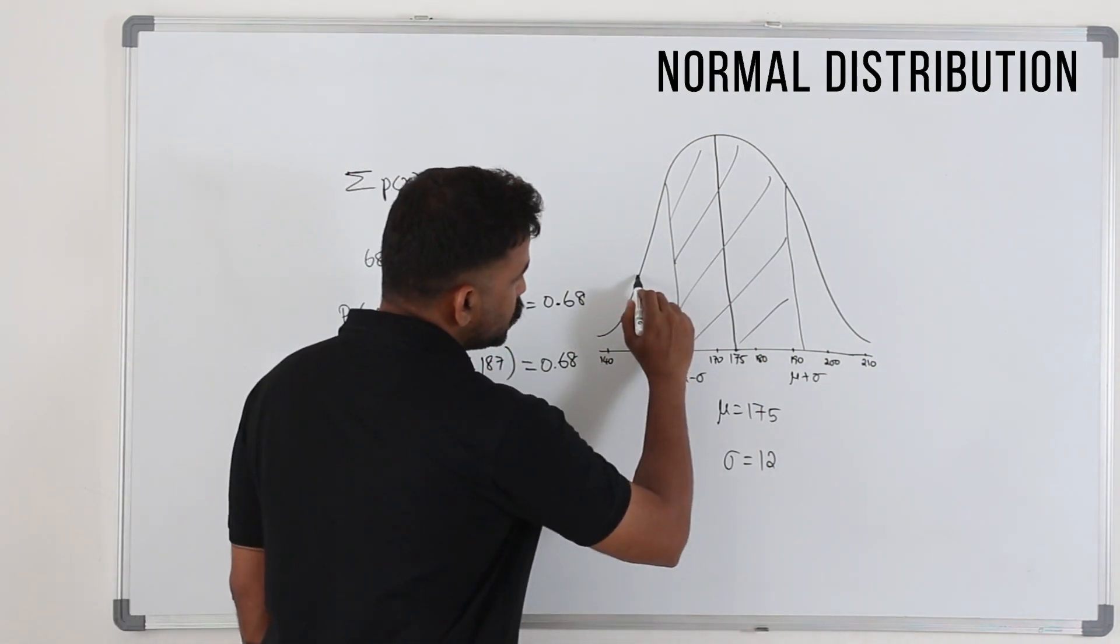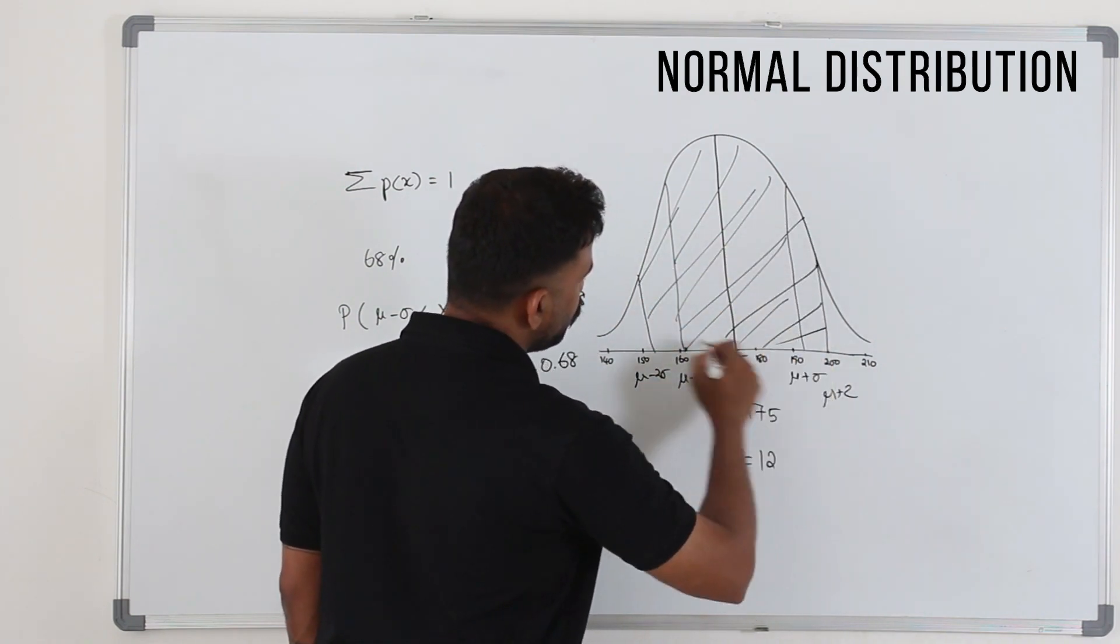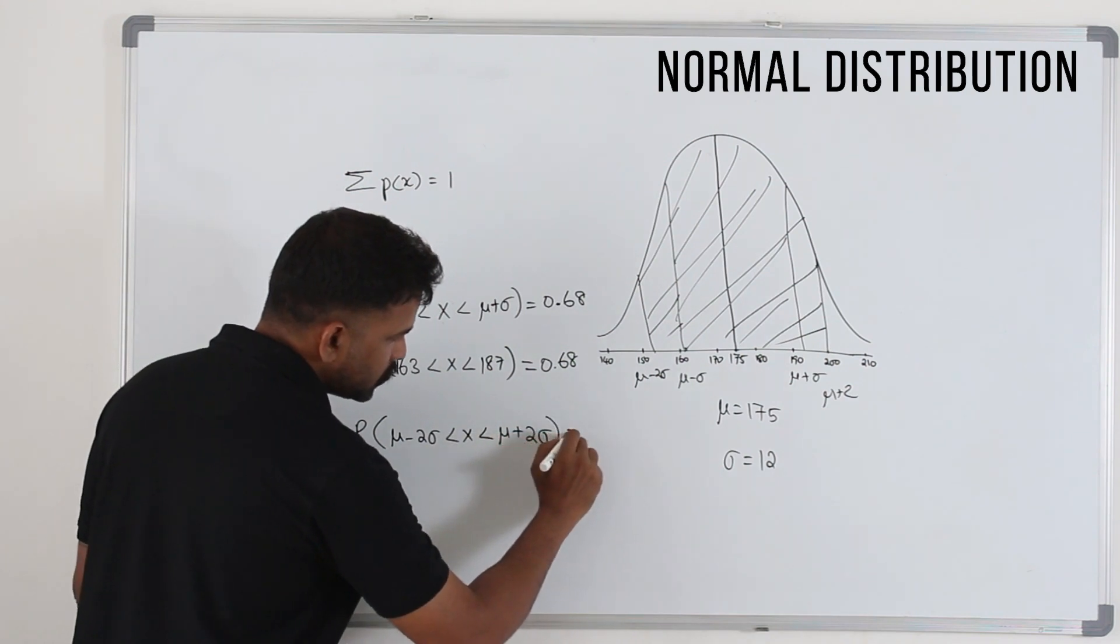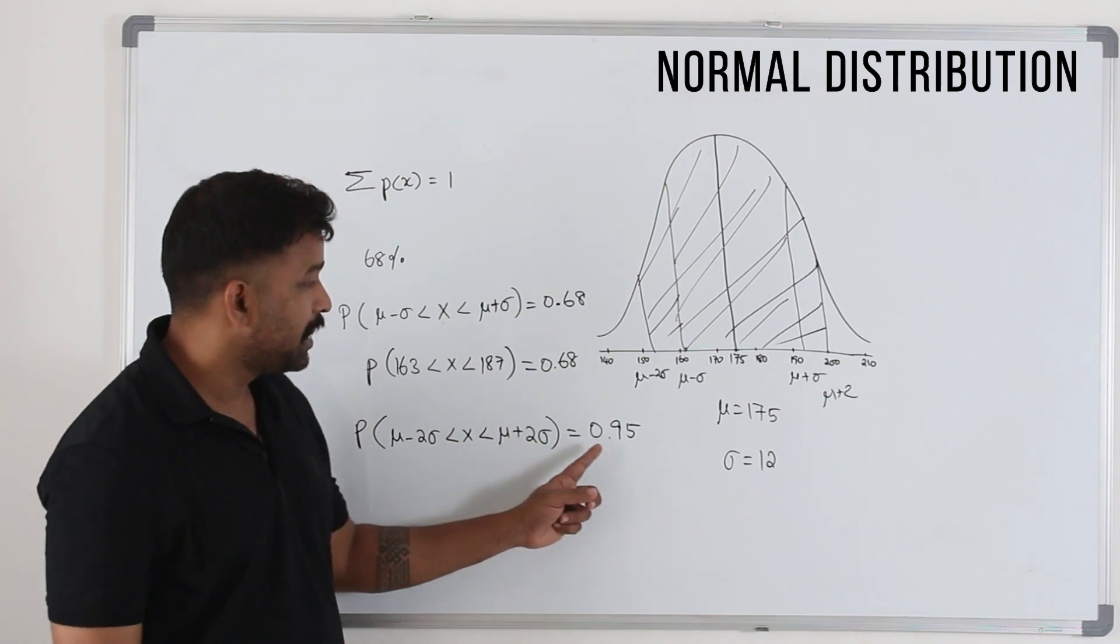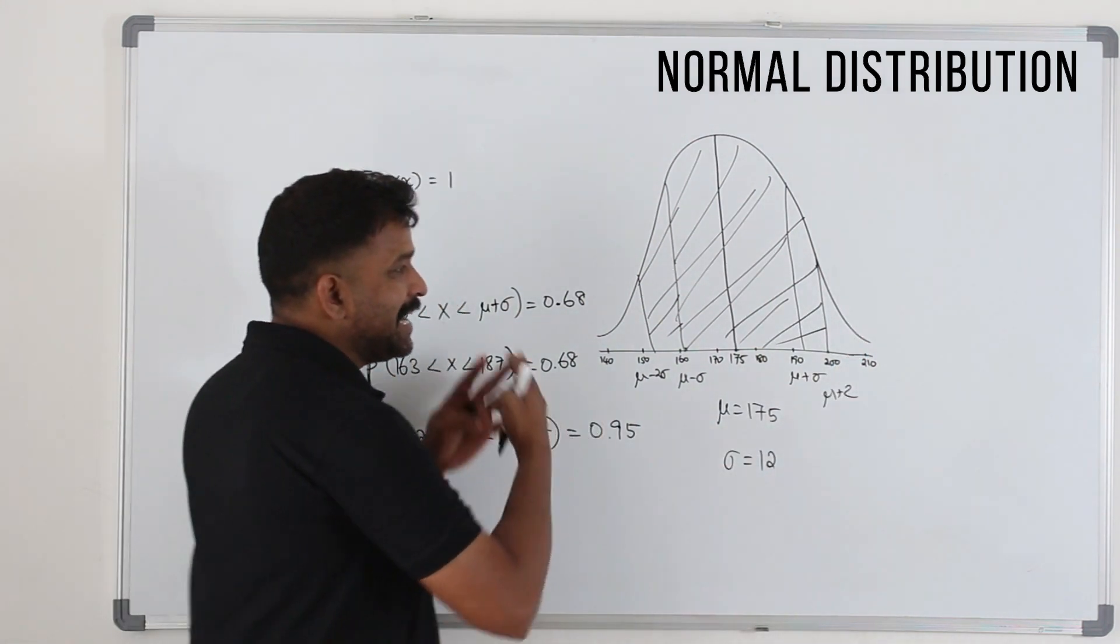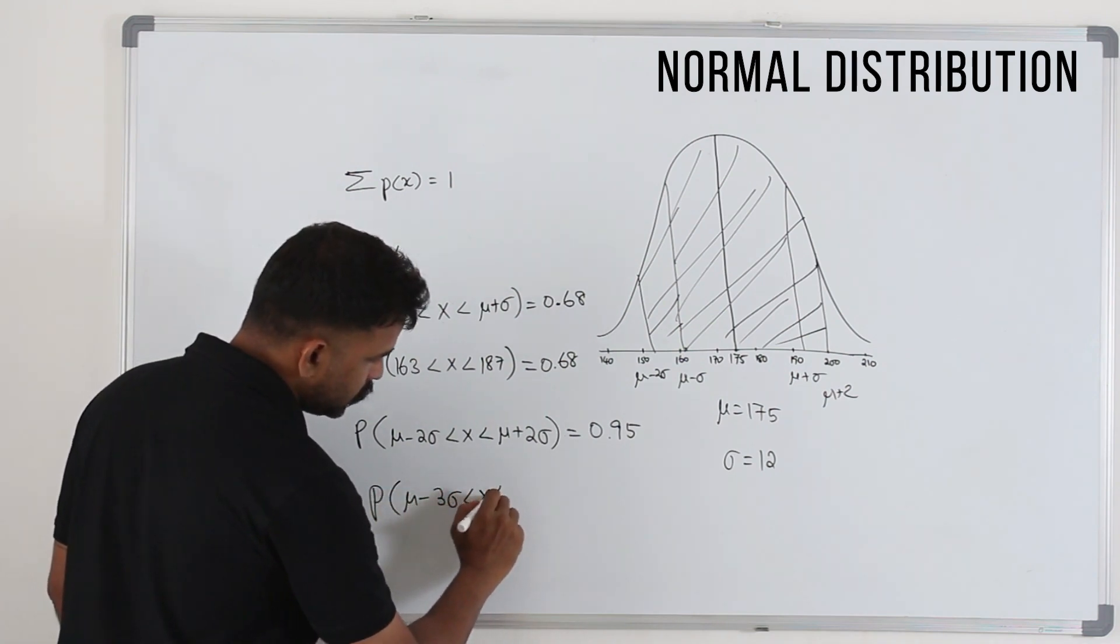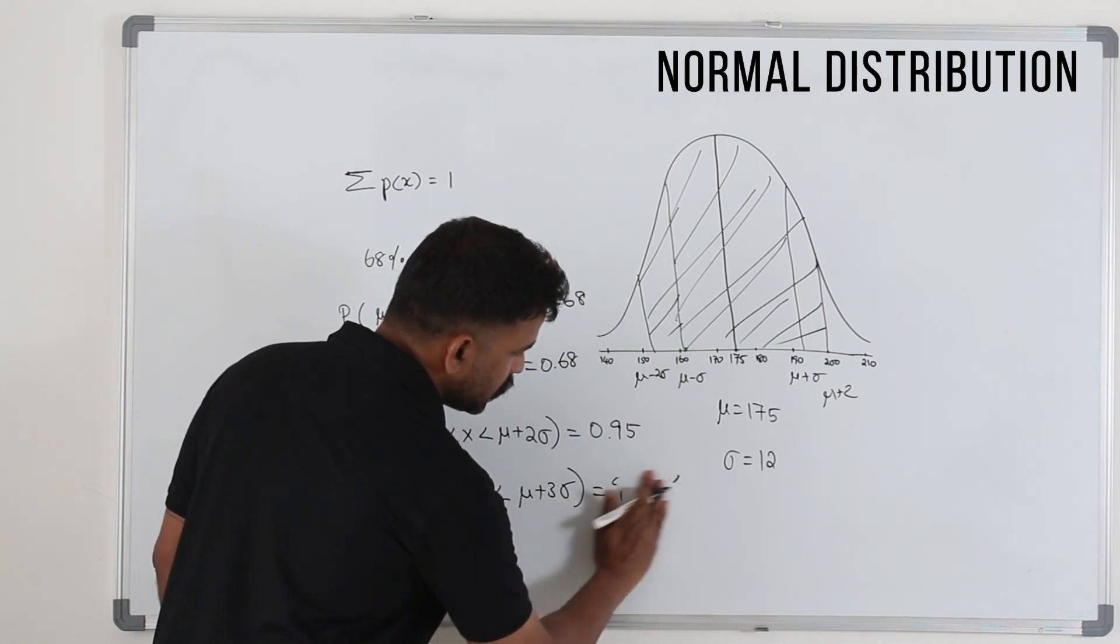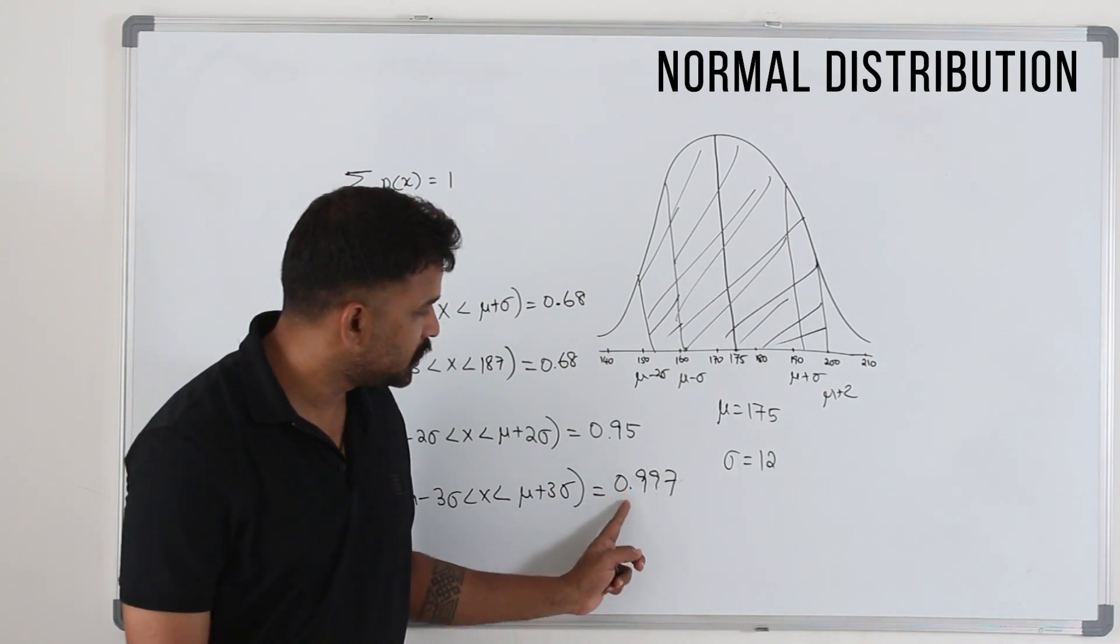If you take μ minus 2σ here and μ plus 2σ here, and take the area between these two points, the area between μ minus 2σ to μ plus 2σ, 95% of the data lies within this range. So it's 0.95. The probability will never be more than 1. The total area is 1, it won't be more than 1. And then nearly all the data lies within μ minus 3σ to μ plus 3σ. Nearly all the data, 99.7 percent. You can write it as 0.997. The probability between μ minus 3σ to μ plus 3σ is 0.997.